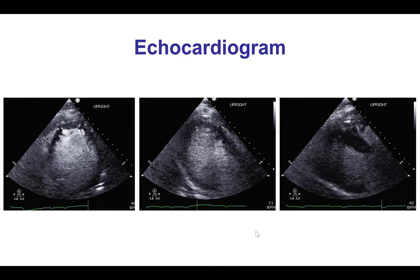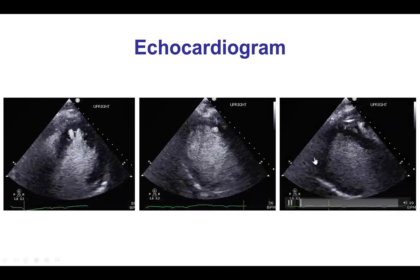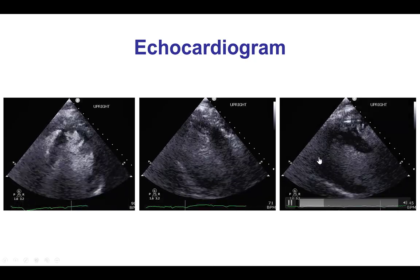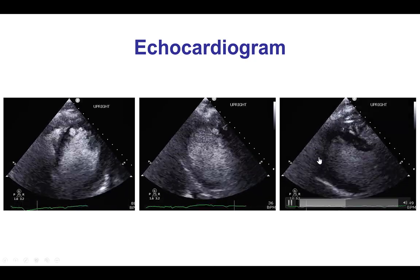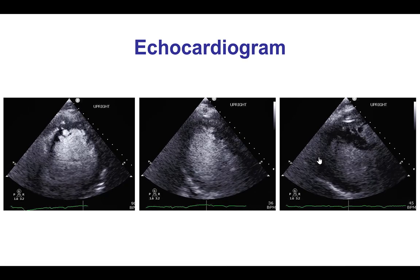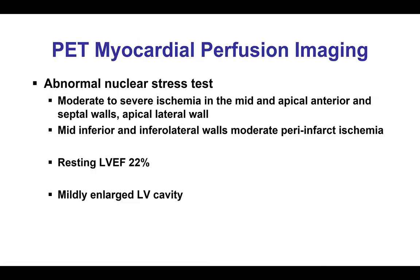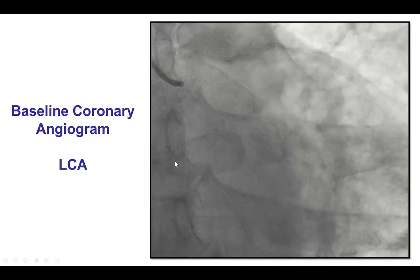These are the images with echocardiographic contrast to facilitate visualization. A stress test was performed that showed ischemia in both the anterior as well as the inferior wall, with an ejection fraction of 22%.